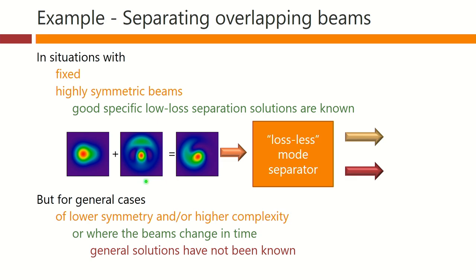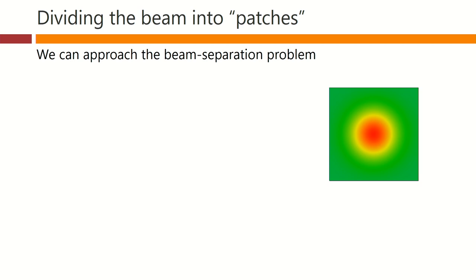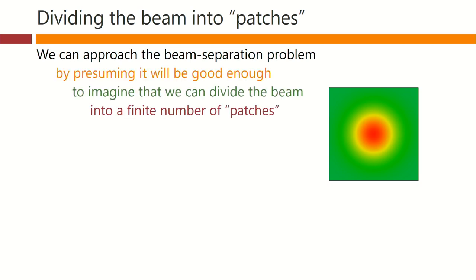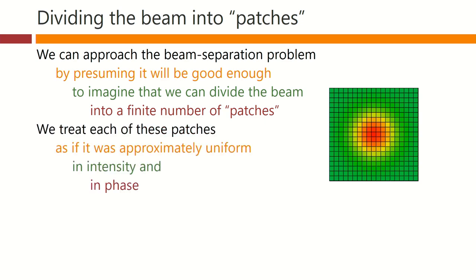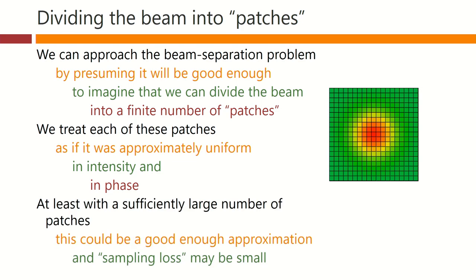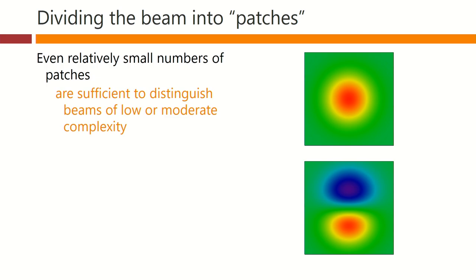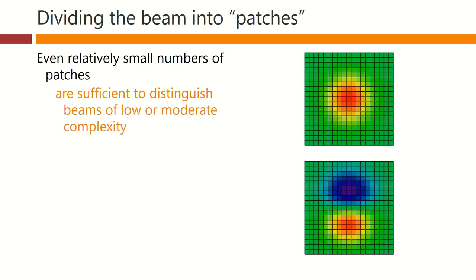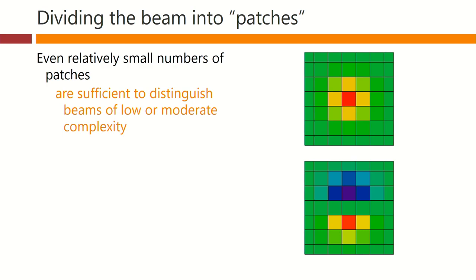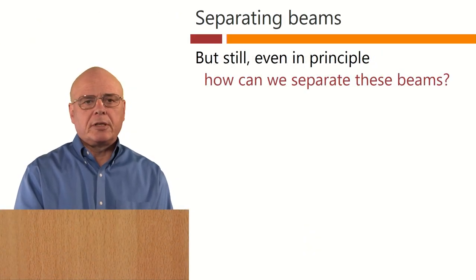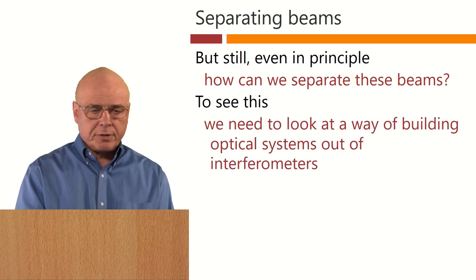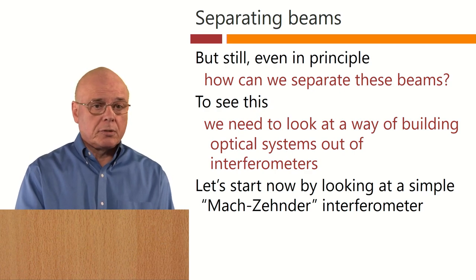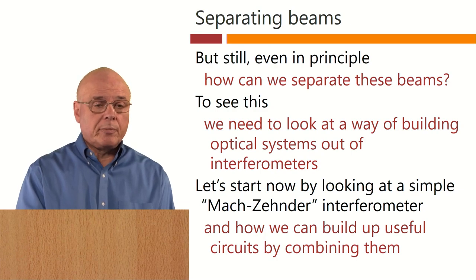One approach is to divide the beam into patches — a finite number of patches, treating each as approximately uniform in intensity and phase. At least with a sufficiently large number of patches, this could be a good enough approximation, and the loss associated with this sampling could be made small enough. Even with relatively small numbers of patches, we are able to distinguish beams of low or moderate complexity. But still, even in principle, how can we separate these beams? To see this, we need to look at a way of building optical systems out of interferometers. Let's start by looking at a simple Mach-Zehnder interferometer and see how we can build up useful circuits by combining them.